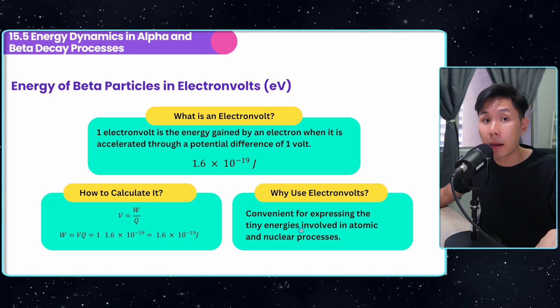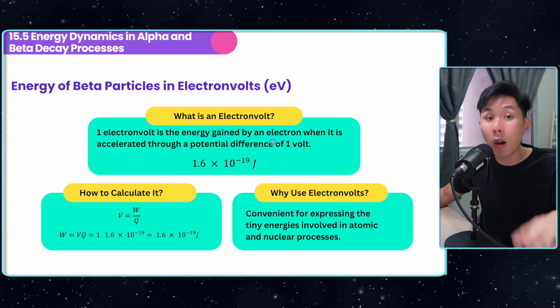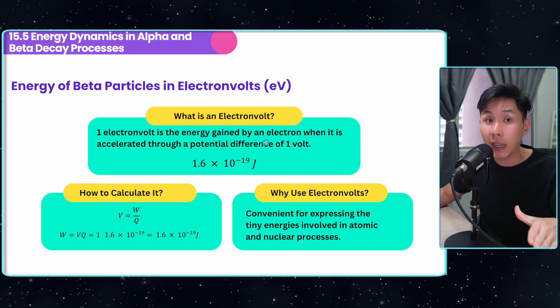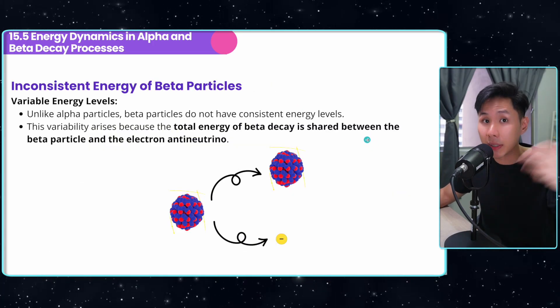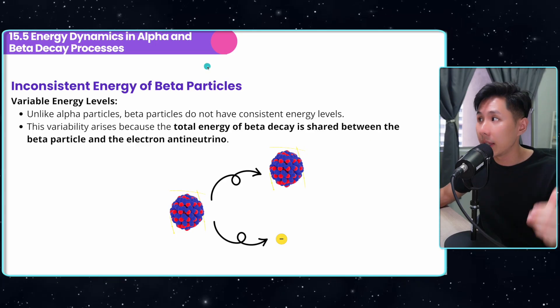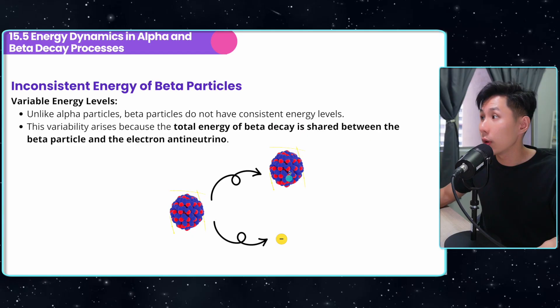The reason why we want to use electron volt is so that it helps us represent tiny energies better. Previously, we learned about femtometer, we also learned about unified atomic mass. Now electron volt - they all serve the same purpose to avoid using extremely small values. So just now we mentioned that alpha particles all have the same kinetic energy. For beta, it's a little bit different, it does not have consistent energy. This is because during beta decay, the energy is not just gained by the beta particle.